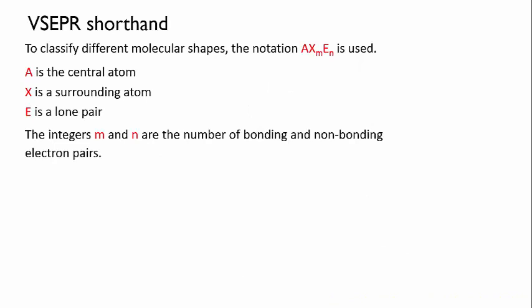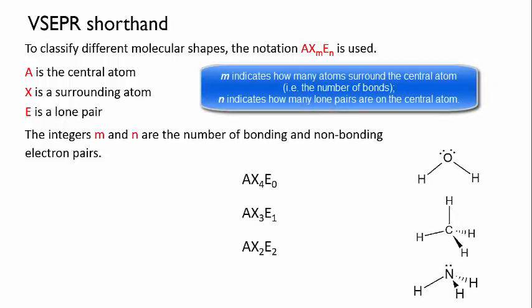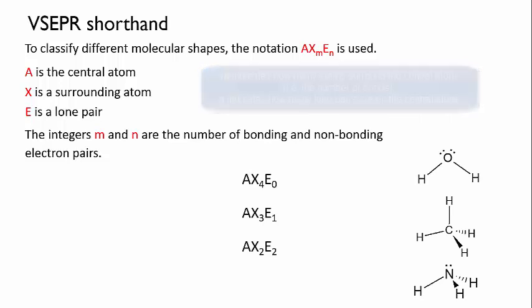Now VSEPR theory has a shorthand that allows you to summarize the bonds and lone pairs around the central atom, and therefore to see more easily what the molecular shape will be. This is the AXE notation. A represents the central atom, the X's are surrounding atoms, and the E's are lone pairs. So try this. Which of these three VSEPR shorthand notations on the left matches with each molecule on the right? See if you can pause the video and work it out. So methane with four bonds around the central atom and no lone pairs is denoted AX4E0. Ammonia with three bonds and one lone pair is denoted AX3E1. And water with two bonds and two lone pairs is AX2E2.